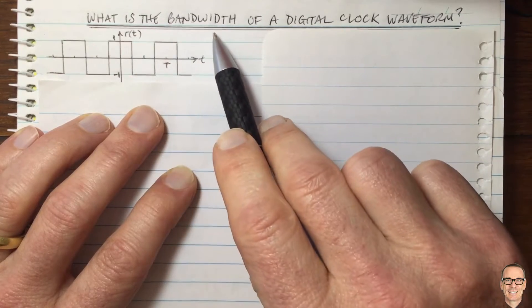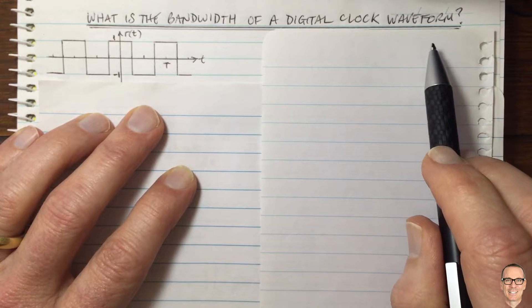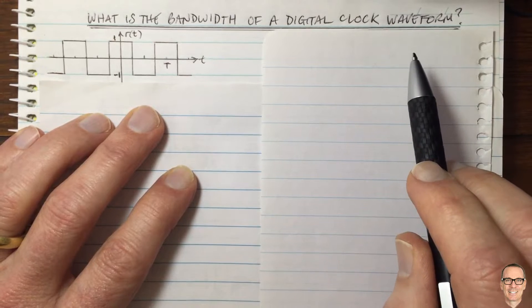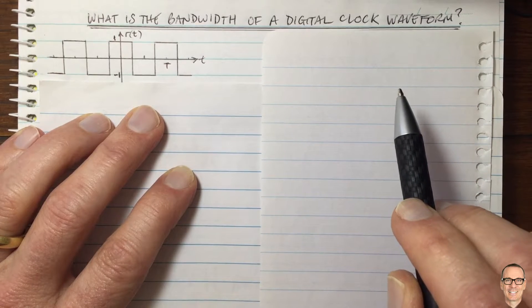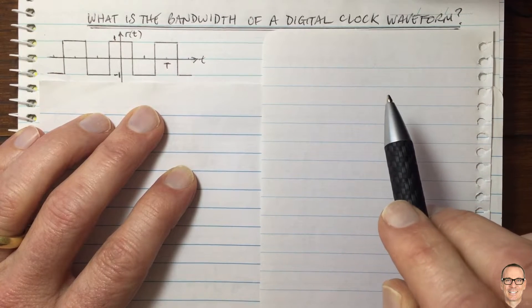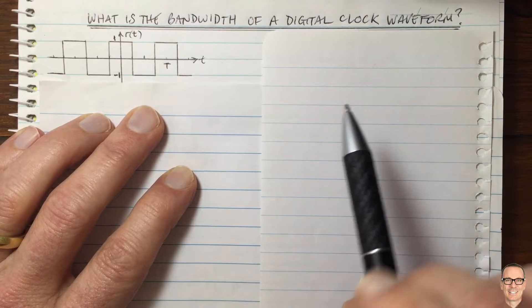So what is the bandwidth of a digital clock waveform and how does it affect circuit design in digital circuits and computers?